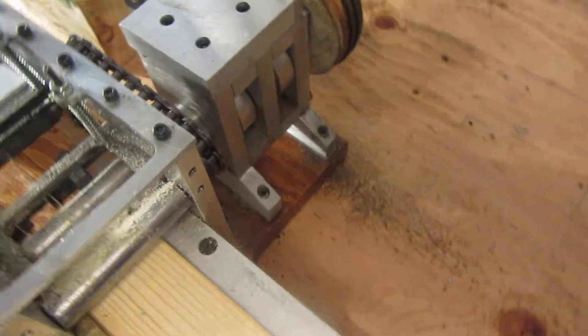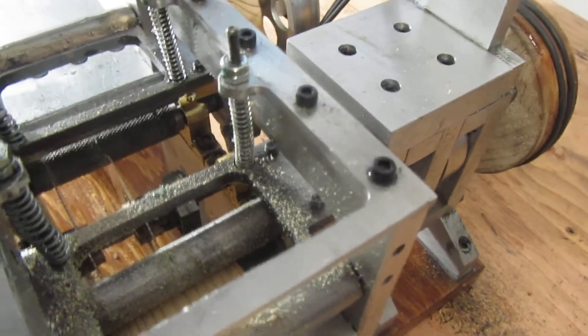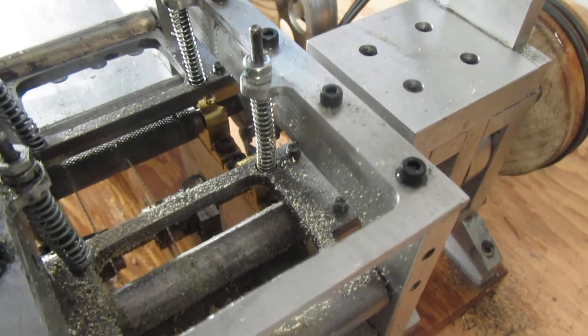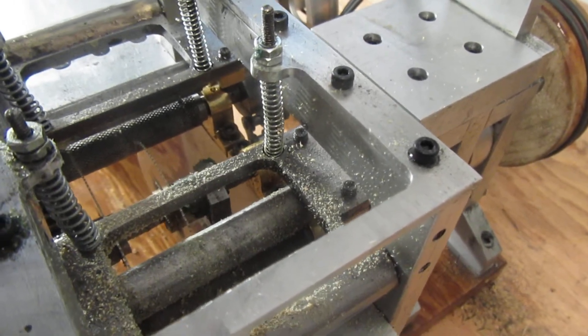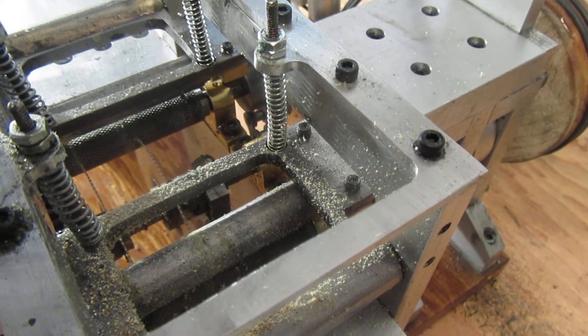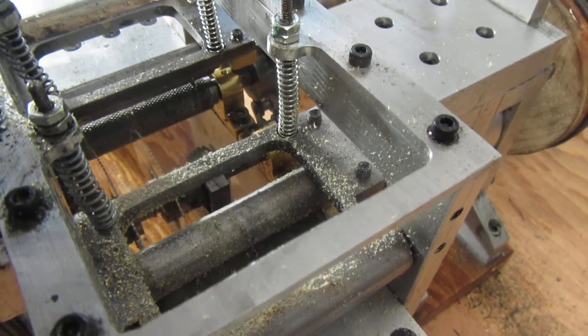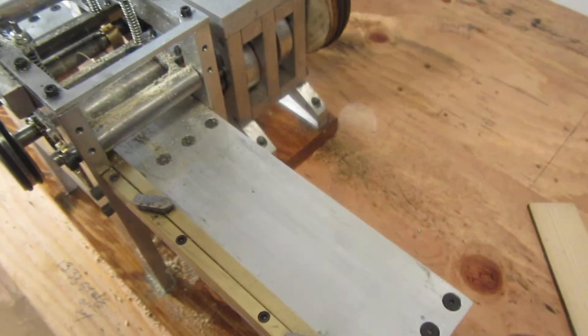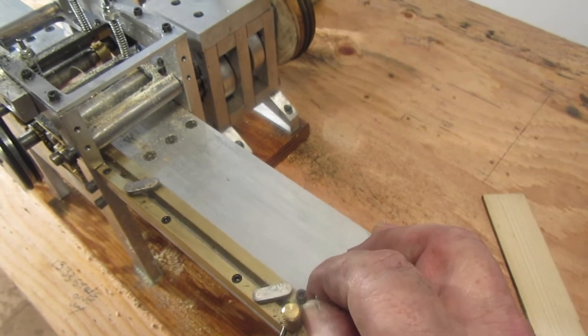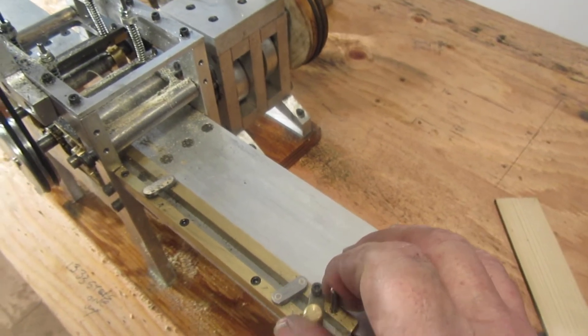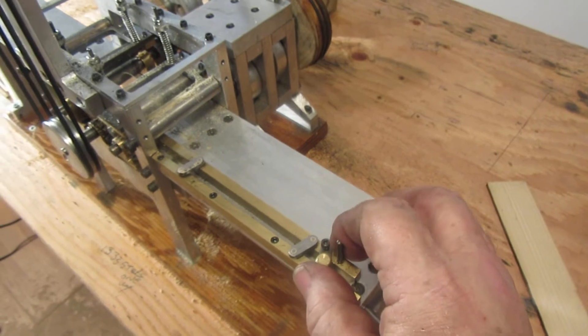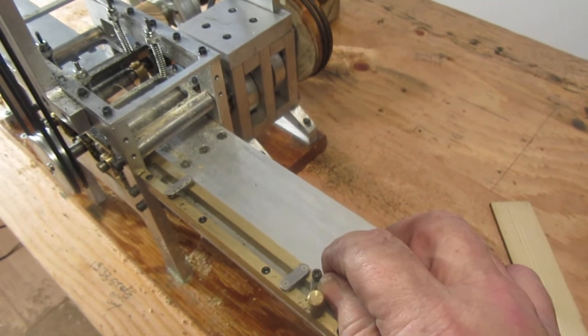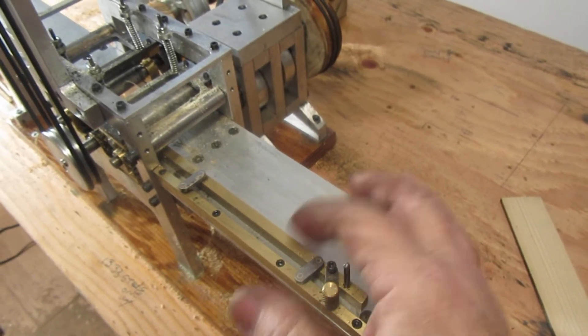Now, the twin saw blades are adjustable. I can move them back and forth to determine what width of board I want to cut. And the fence is also adjustable, so I can adjust for how wide the board is that I cut off on the near side. Because again, the board is fed in against the fence.